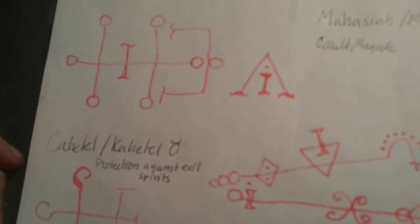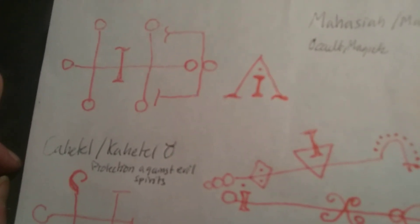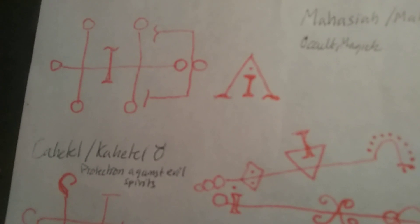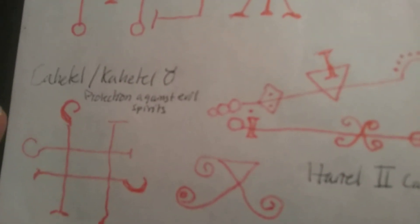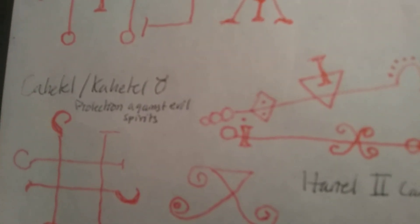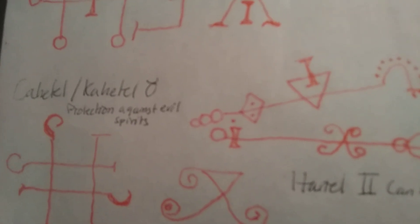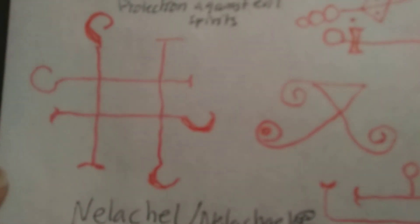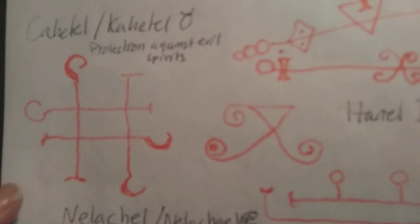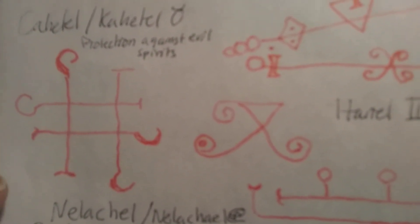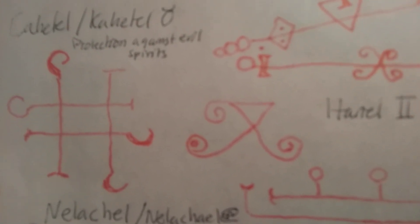We start with Mahasaya in Aries, who is good with teaching occult and magic. Then Cahetel in Taurus, who is good with protection against evil spirits. Then Hariel in Gemini, who can assist you with magic and power.